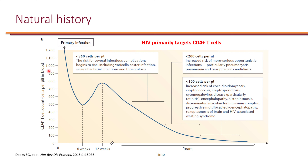In advanced HIV, a normal person has a large amount of CD4 cells. On the y-axis we're looking at concentration of CD4 cell count in the blood, and on the x-axis we're looking at time. Once a person gets primary HIV infection, CD4 cells start to go down. Without ART, by the time the CD4 count hits less than 350, the risk of some infections goes high, including viral infections like varicella zoster and bacterial infections like tuberculosis. These occur more frequently, though they are not necessarily opportunistic.